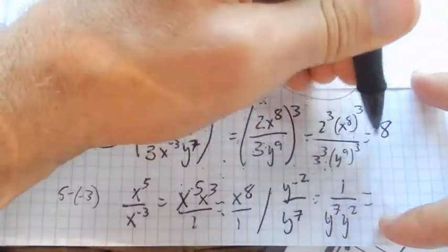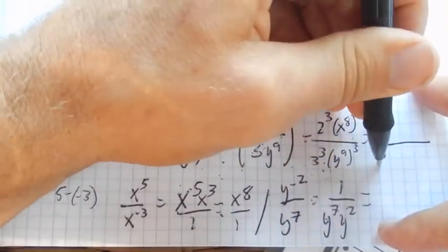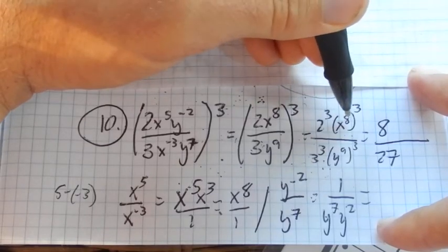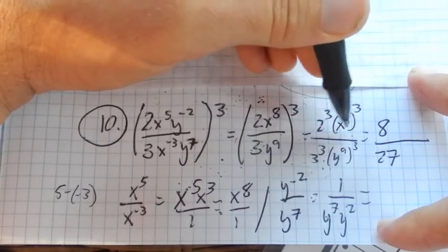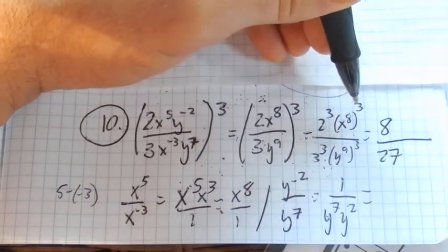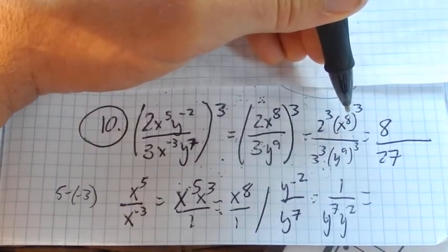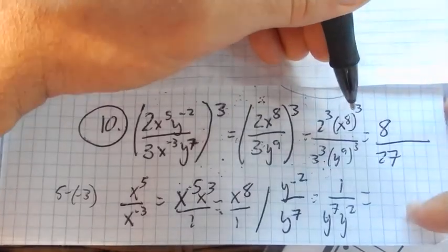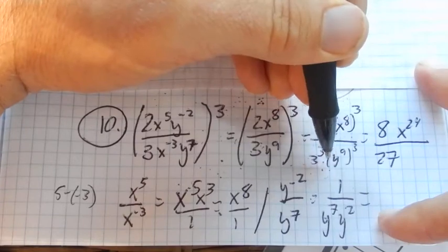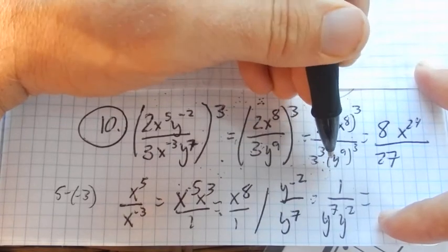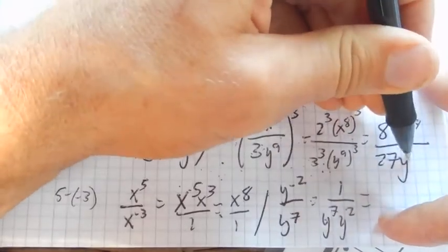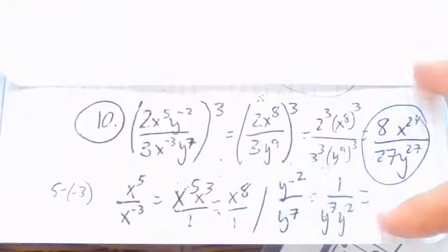Two cubed is eight, three cubed is 27. x to the eighth cubed - remember, this means three of these x to the eighths all multiplied together. I have eight x's, they're all cubed, so that means all together I have eight times three, 24. 24 of these x's all multiplied together. And the same thinking with the y's, y to the ninth to the third is going to be y to the 27th. There it is.